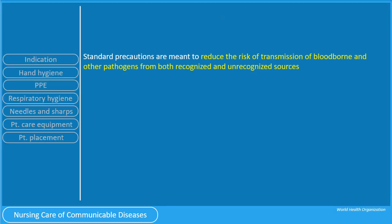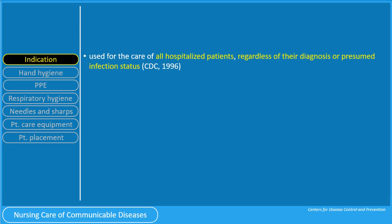The isolation guidelines contain a two-tiered approach. The first is the standard precaution. Some agencies may use an earlier term, UP, or universal precaution, reflecting their applicability in all client care situations. The standard precautions are meant to reduce the risk of transmission of bloodborne and other pathogens from both recognized and unrecognized sources. The standard precaution, therefore, is indicated for use for the care of all hospitalized patients regardless of their diagnosis or presumed infection status.